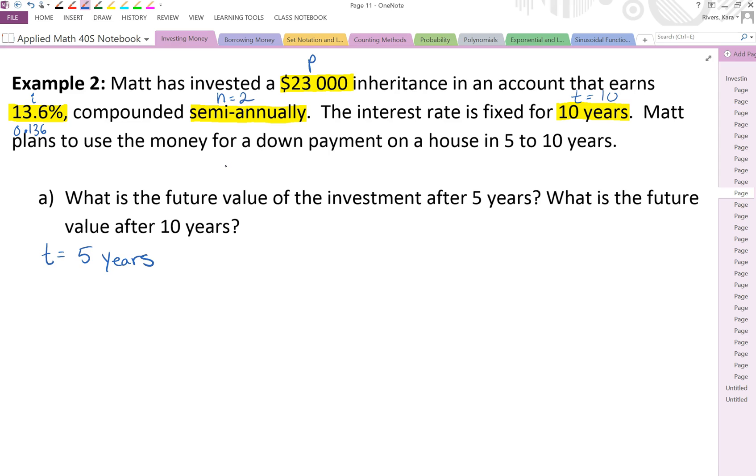So using our formula same as before. A is equal to P, 23,000, times 1 plus I over N. 1 plus I would be 0.136 divided by N which is 2. All to the exponent of N times T, 5 times 2.